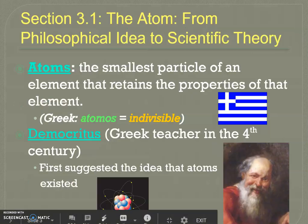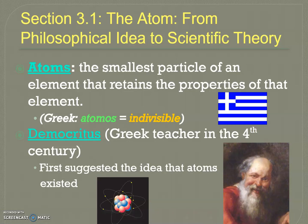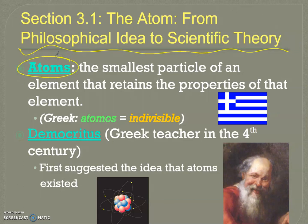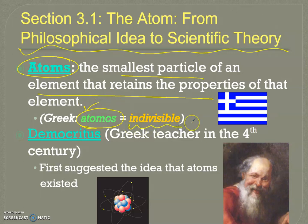We're going to take a look at the philosophical idea of an atom and see how it evolved into the scientific theory we have today. Atoms are synonyms for our elements — they're the smallest particle of an element that retains the properties of that element. The word comes from the Greek word 'atomos,' which means indivisible — it cannot be broken apart.